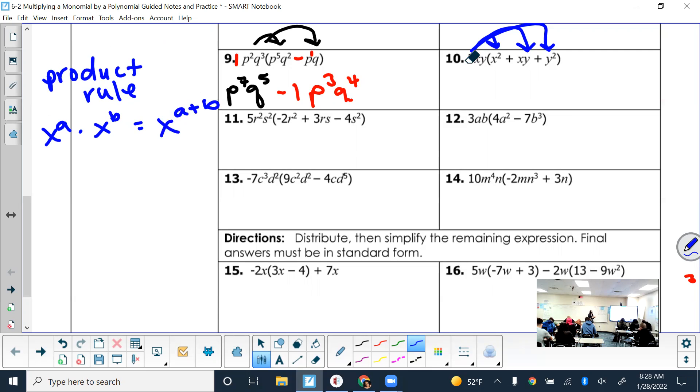Start with the coefficients. 3 times 1 is 3. And then x times x squared is x to the third power. So x to the 1 times x squared, add the exponents, get x to the third. Then we still have that y there. So what do I do with the y even though the first term doesn't have a y? Does it just disappear? You just put it with that term. So it's like having y times 1.